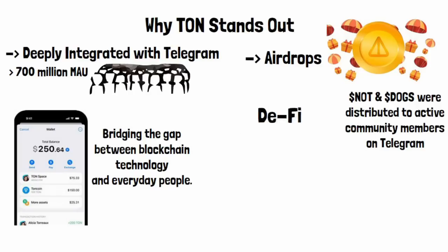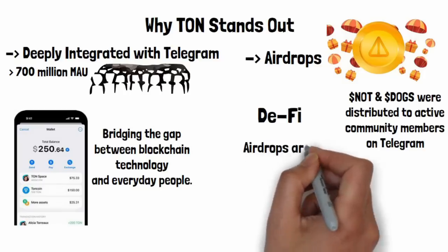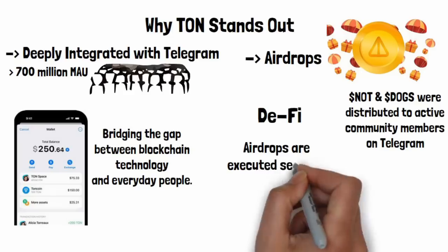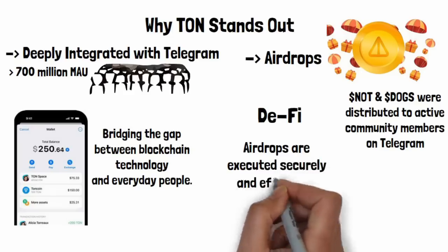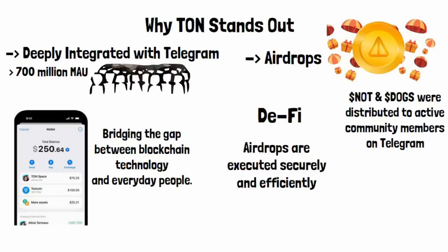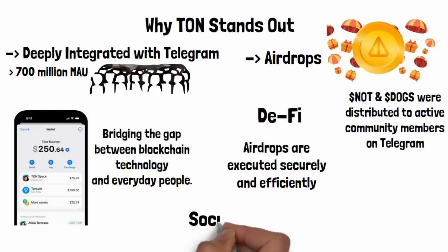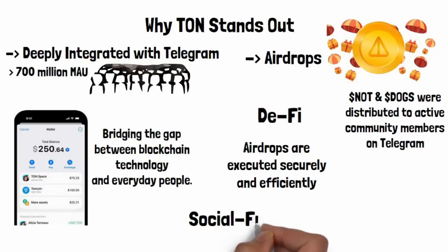These tokens represent new opportunities within Telegram's evolving ecosystem, allowing users to actively participate in decentralized finance through simple, familiar tools like messaging apps. With the TON blockchain, airdrops like these are executed securely and efficiently thanks to its proof of stake system and smart contract capabilities, allowing projects to distribute tokens directly to a massive user base without the need for intermediaries. These airdrops demonstrate how TON is building a social finance ecosystem directly within Telegram's familiar environment.